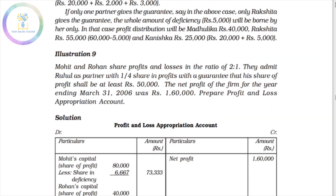Mohith and Rohan share profits and losses in the ratio 2:1. They admit Rahul as a partner with a 1/4 share in profit, with a guarantee that his share of profit shall be at least 50,000. The net profit of the firm for the year ending March 31, 2006 was 1,60,000. Prepare the profit and loss appropriation account.